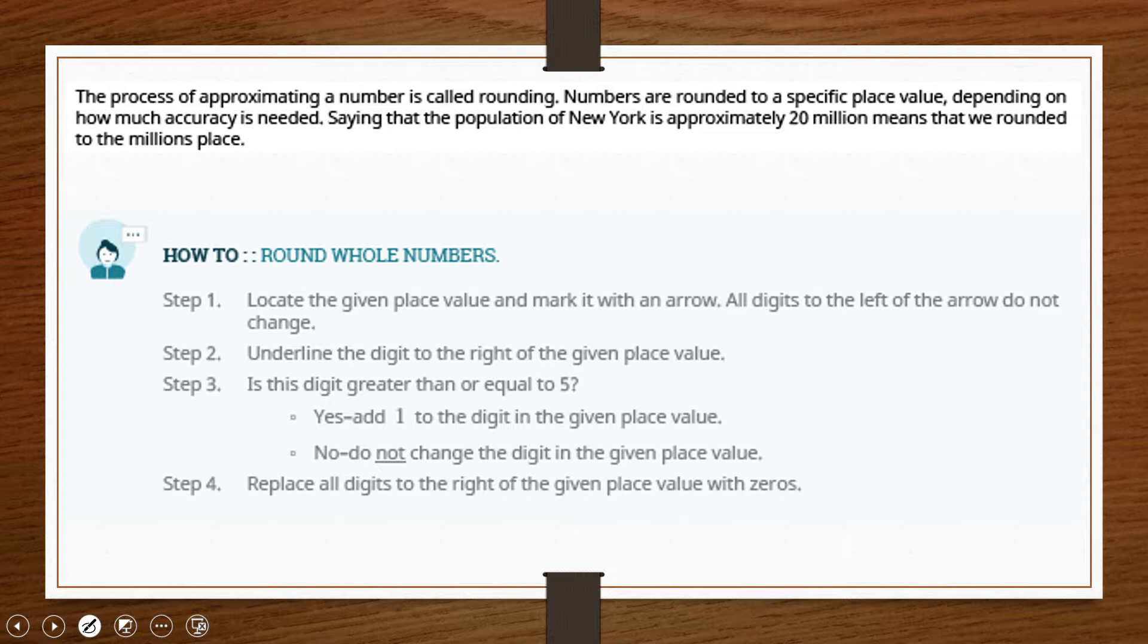So how do we actually round whole numbers? Again, it has to do with place value. We locate the given place value that we're interested in rounding to. Now find the digit to the right of that given place value.